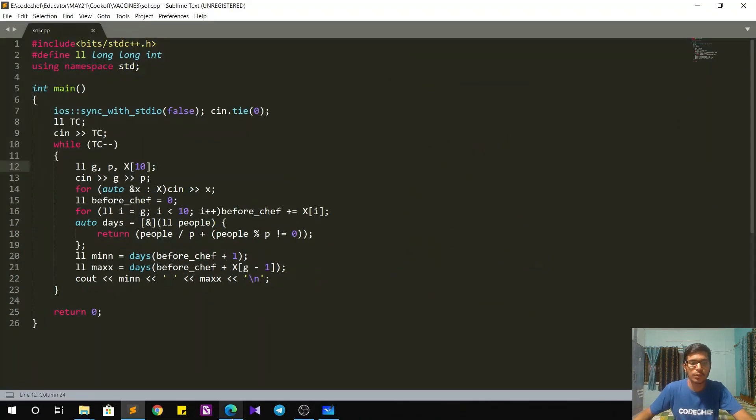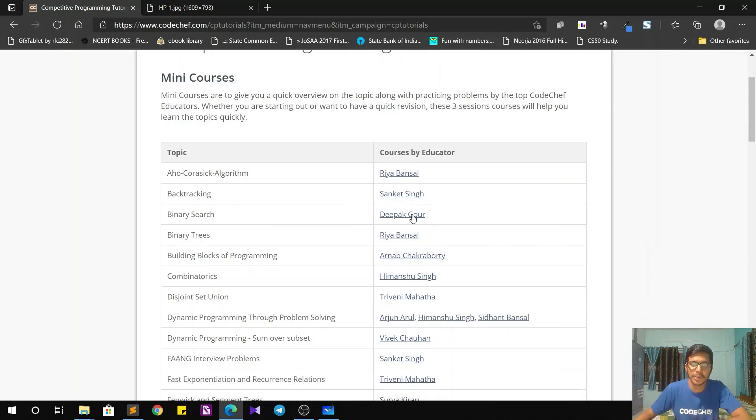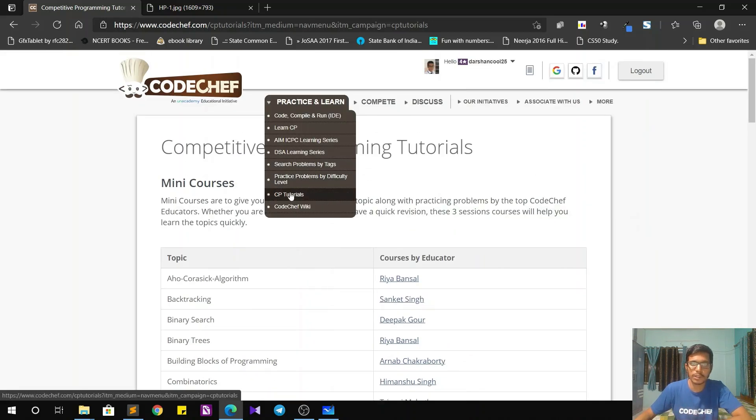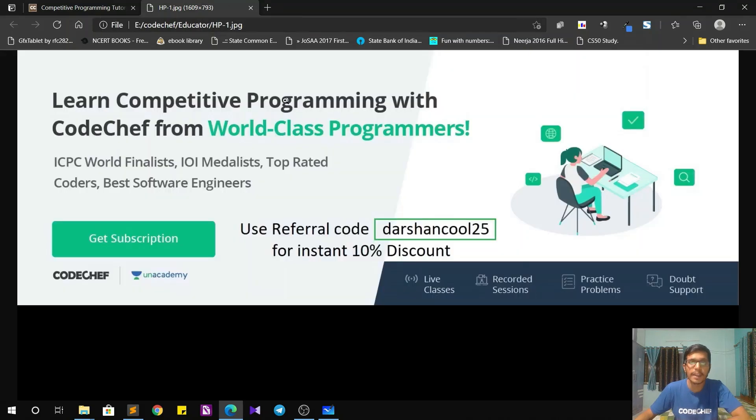Now I would like to tell you guys about the competitive programming tutorials that we have at Code Chef. So these are the mini courses taught by expert educators and they are on all possible topics in competitive programming. So if you are facing any difficulty in learning a new topic, this is the place where you should head to. So you can find this over here on the website. Also, if you want even more structured content, you can opt for our plus subscription at Anacademy. And while doing so, you can use my referral code DARSHNKUL25 to get instant 10% discount.